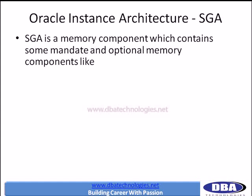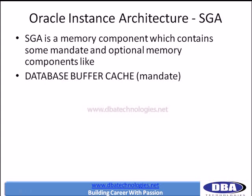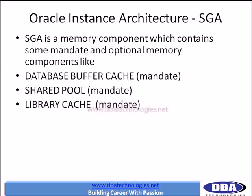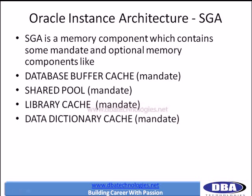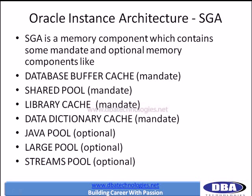So, what is our understanding about Oracle instance? Oracle instance is a combination of System Global Area, which is completely in memory, containing mandatory and optional memory structures. Mandatory structures include: database buffer cache, shared pool, library cache, and data dictionary cache. Optional ones include: Java pool, large pool, and streams pool. These optional ones get configured depending on the type of application planned for the given database.